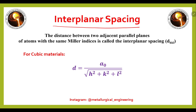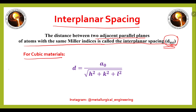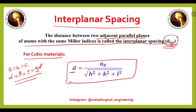The next topic is interplanar spacing, defined as the distance between two adjacent parallel planes of atoms with the same Miller indices, denoted as d_hkl. For cubic materials where a = b = c and α = β = γ = 90°, the formula is: d = a / √(h² + k² + l²), where a is the lattice parameter and hkl are the Miller indices of the plane.